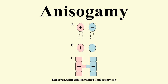In flowering plants, the gametes are non-motile cells within gametophytes. The form of heterogamy that occurs in animals, including humans, is oogamy, in which a large, non-motile egg cell is fertilized by a small, motile sperm cell.